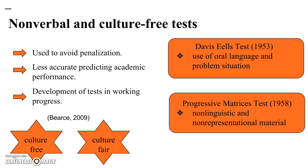Two examples of culture-free assessments are Raven's Progressive Matrices, which uses graphic representations, orientation toward problem solving, abstraction, and classification, and the Davis-Eells test, which uses only oral language and problem solving familiar to lower-class children. Research shows that underprivileged groups perform better on non-verbal tests, and the development of culture-free assessments is still a work in progress.